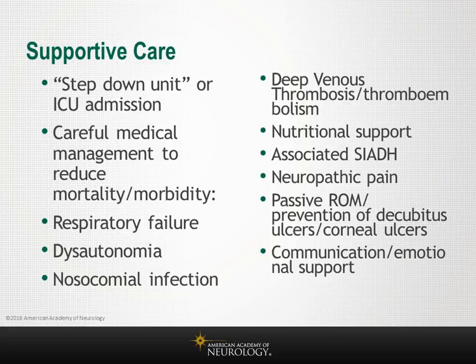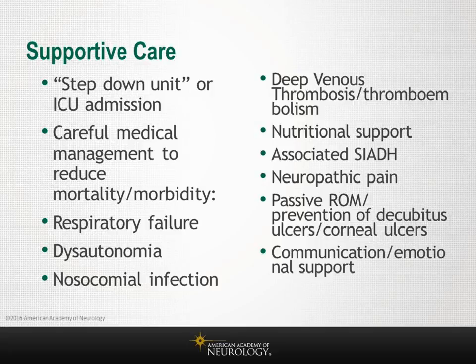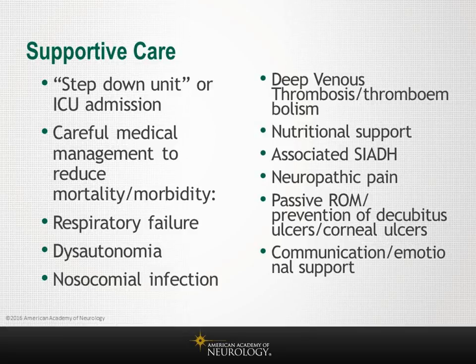If neuropathic pain does not respond to non-steroidal agents, other agents such as gabapentin, pregabalin, carbamazepine, oxcarbazepine, or tramadol may be needed. Passive range of movement to prevent contractures, prevention of decubitus ulcers, and prevention of corneal ulcers in patients with bifacial weakness are important. Communication and emotional support cannot be understated — patients become very weak very acutely and are frightened. One needs to explain that they will get better for the most part. This is especially critical in ventilated patients, who are often completely conscious.